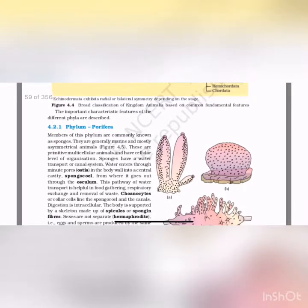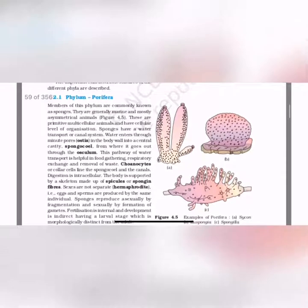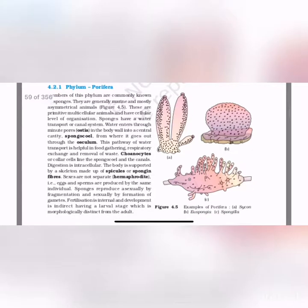In plants we say divisions; in animals we say phyla. The first phylum is Porifera — pore-bearing organisms — commonly known as sponges. They are generally marine and mostly asymmetrical animals. These are primitive multicellular animals with cellular level of organization. Previously, true sponges were used as cleaning sponges, though today most are synthetic.